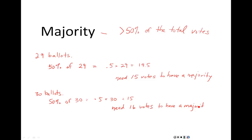Why does it work that way? If your candidate only got 15 votes, there might be another candidate who also had 15 votes, and there would be a tie. If you have a majority, you want a clear victory, so you need actually greater than 50% of the total votes. Figure out what that 50% line is, then round up to the next vote — if it lands on a whole number, that's not good enough; you need more than 50%.